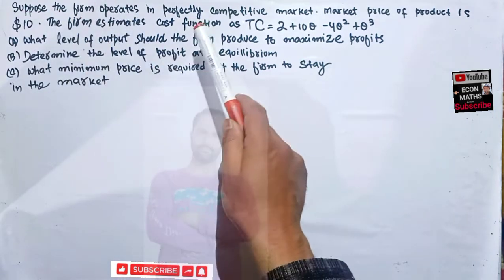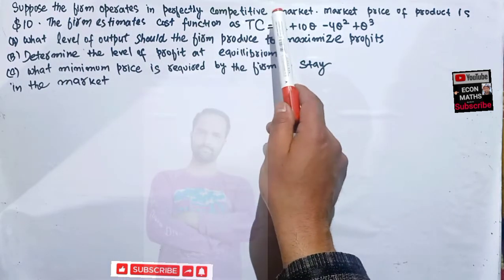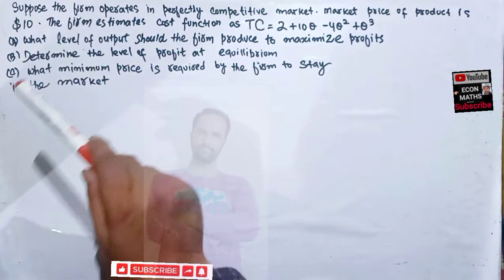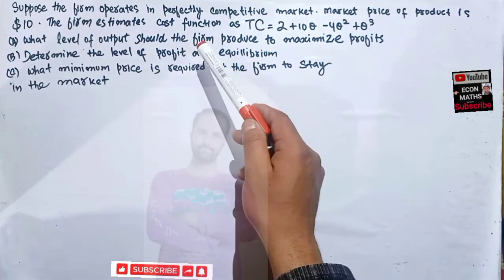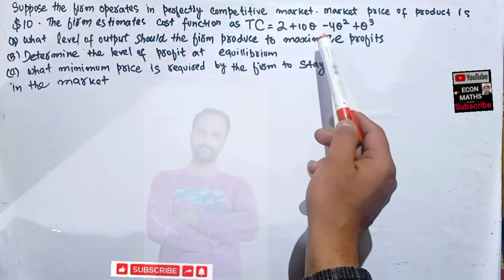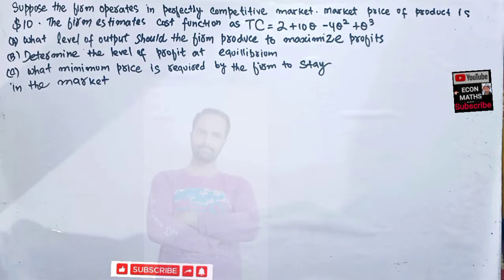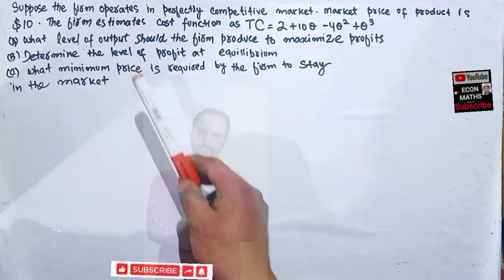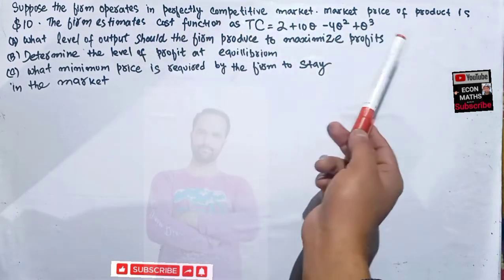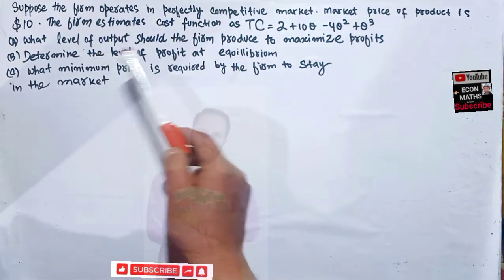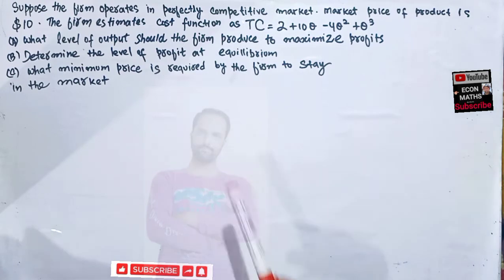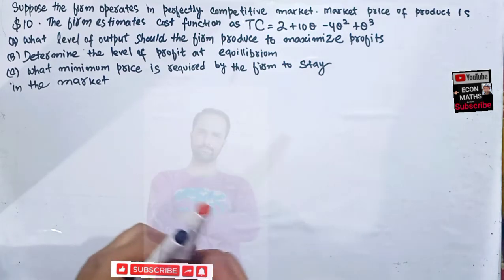Suppose the firm operates in a perfectly competitive market. The market price of the product is $10. The firm's estimated cost function is: total cost equals 2 plus 10Q minus 4Q squared plus Q cubed. We have to find the level of output that maximizes profit, find the profit at equilibrium, and find the minimum price required for the firm to stay in the market.